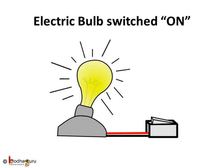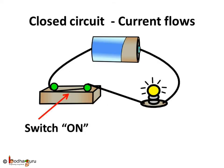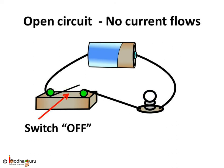What exactly happens when we switch on the bulb? The bulb glows. The current flows in the circuit when it is closed by putting the switch on. So, we see the current flows in the circuit when it is closed. Current does not flow when the circuit is open. And the switch is used to open and close the circuit.